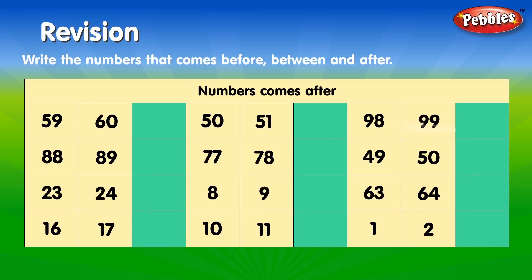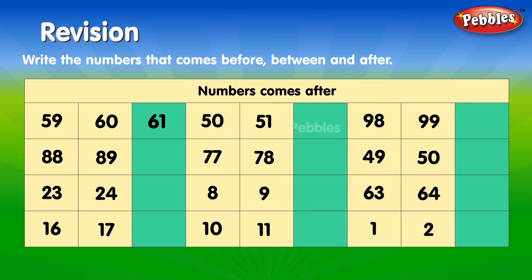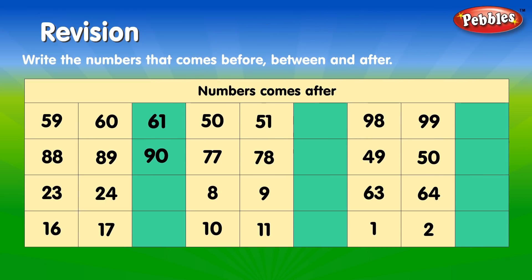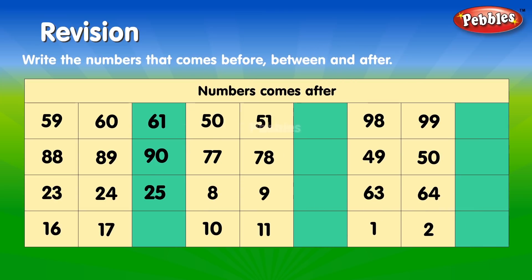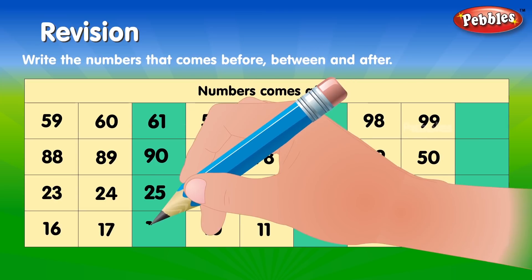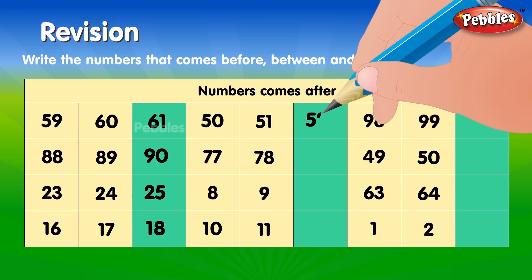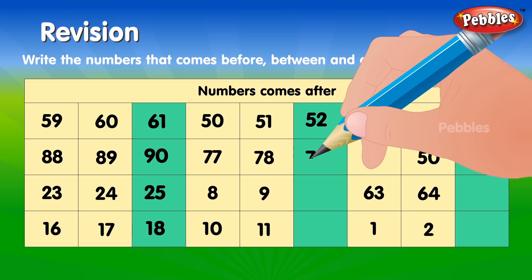Number comes after. 59, 60, 61. 88, 89, 90. 23, 24, 25. 16, 17, 18. 50, 51, 52. 77, 78, 79.